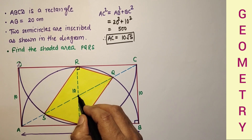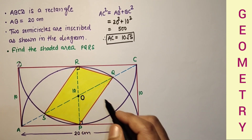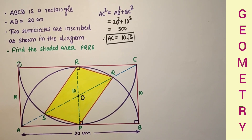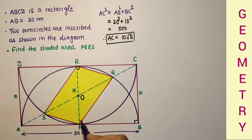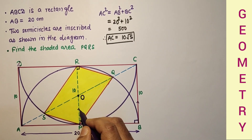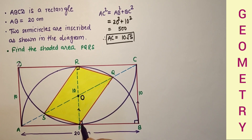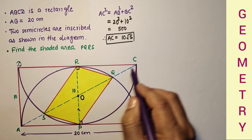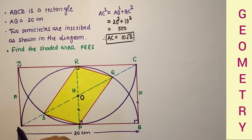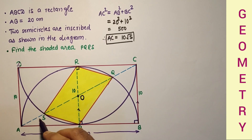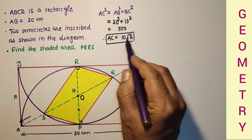Let this intersection point of AC and RP be O. If we consider this triangle, P is the midpoint of AB, and since this angle is 90°, this line is parallel to BC. From the midpoint of AB, if we drop a parallel line to BC, wherever it intersects the opposite side will be the midpoint by the converse of the midpoint theorem. So AO equals OC, and therefore AO equals 5√5.